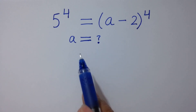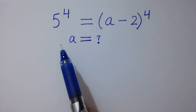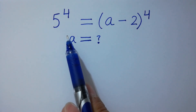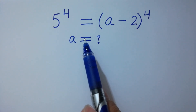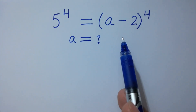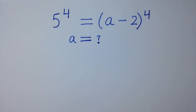Hello friends, find the value of a if 5 to the power 4 equals (a minus 2) to the whole power 4. Let's have a solution here.